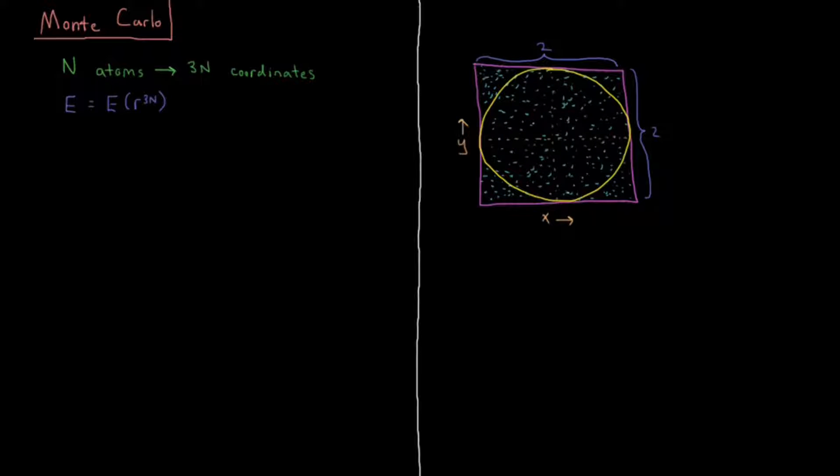In this video we'll discuss Monte Carlo integration, specifically in the context of calculating molecular properties. If we have n atoms, as we've been saying so often in this chapter, we have 3n coordinates for our system, so then our energy would be a function of 3n coordinates.